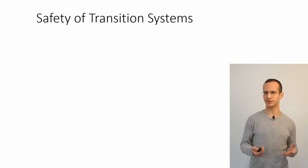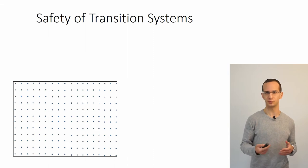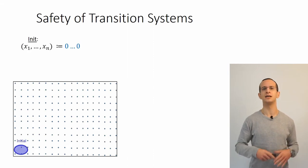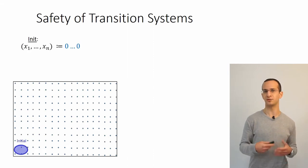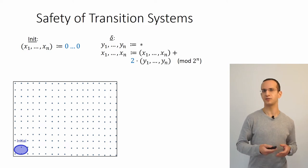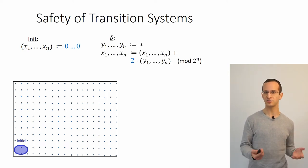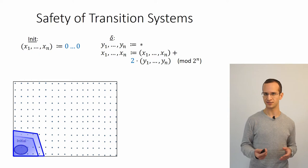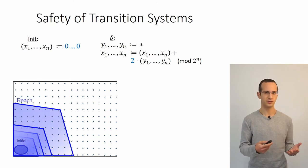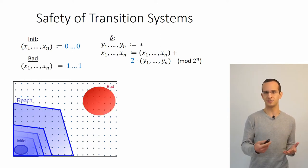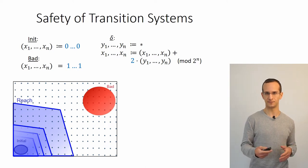Suppose for example we have a system over n propositional variables representing a number in binary which starts from 0, and in each step is incremented by some even number. This defines the reachable states of the system. Now we want to prove that no reachable state is a bad state, and here bad means the state where all the bits are one.